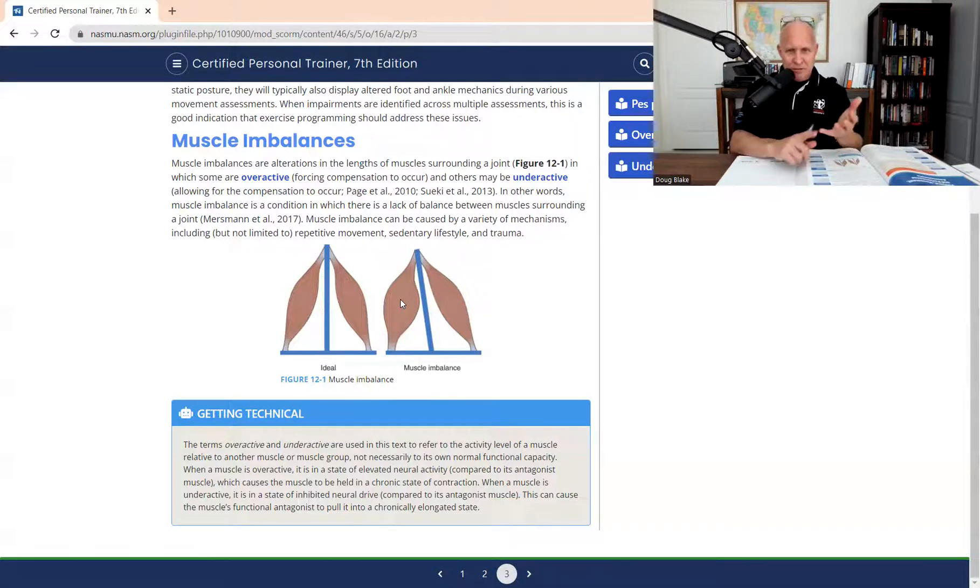You know, that the gluteus maximus is a primary hip extensor, your hamstrings, erector spinae, your rectus abdominis. Once you start that process, all of a sudden you start to realize, Oh, wait a minute. You automatically make that connection.